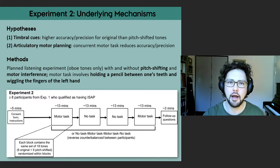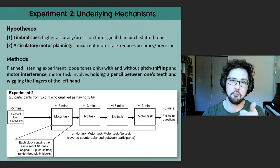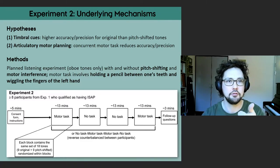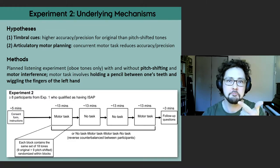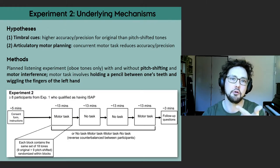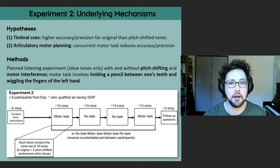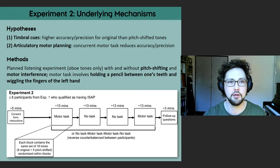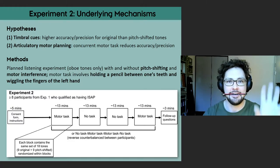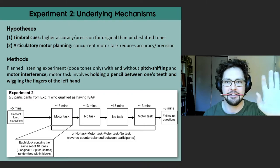The goal of experiment two is to find causal evidence for the underlying cognitive mechanisms of instrument-specific absolute pitch. We expect that people with ISAP may rely on two separate mechanisms. First, on timbral cues and intonational idiosyncrasies resulting from physical constraints of an instrument. Second, on articulatory motor planning — hearing a tone may activate the motor patterns required to play that specific pitch. We interfere with these proposed mechanisms by artificially pitch-shifting tones and by asking participants to hold a pencil between their teeth and to wiggle the fingers of their left hand continually.